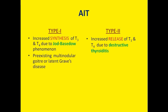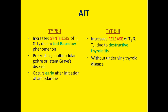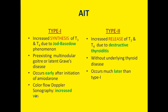Type 1 AIT occurs in patients with pre-existing multinodular goiter or latent Graves' disease, whereas Type 2 occurs in those without any underlying thyroid disease. Type 1 occurs early after initiation of amiodarone, whereas Type 2 occurs much later. They can be differentiated using color Doppler sonography: Type 1 shows increased vascularity, whereas Type 2 shows absent vascularity.